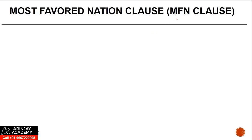Most favored nation clause. What happens is that there are two countries, let's say X and Y. The way these treaties are structured are a lot more dependent on the relationships which one country has with the other and respect for international laws, rather than going strictly by the law or what is there in some other treaty.